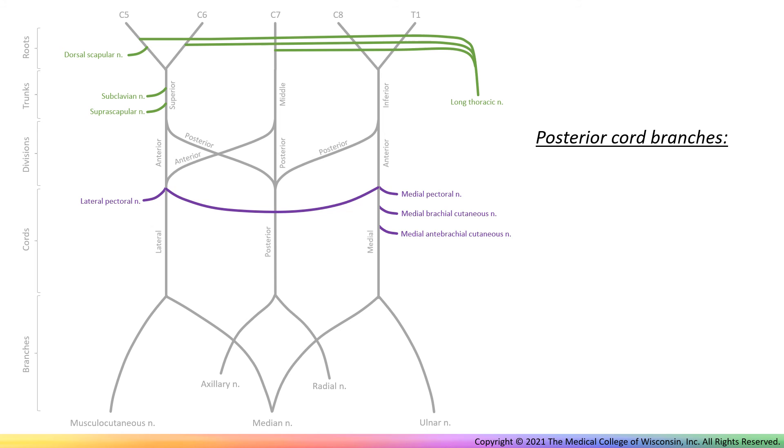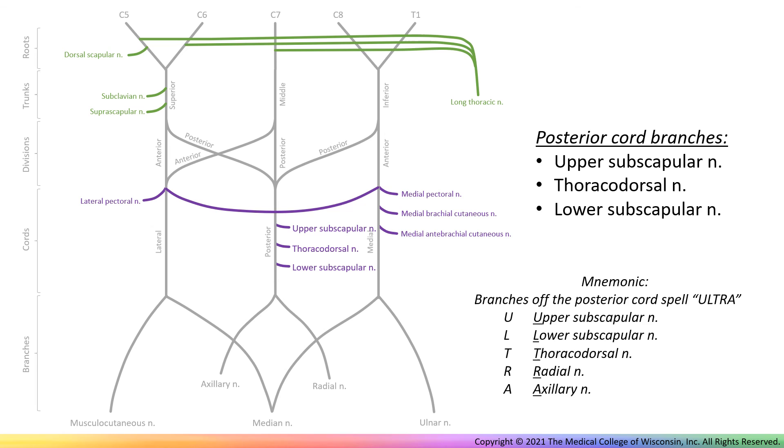Finally, off the posterior cord are the upper subscapular, thoracodorsal, and lower subscapular nerves. Note that along with the radial and axillary nerves, the branches of the posterior cord spell the word ULTRA.